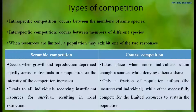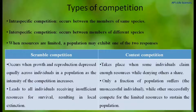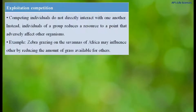In contest competition, some individuals claim enough resources while denying others a share. Only a fraction of the population suffers — the unsuccessful individuals who cannot claim ownership of the food — while others successfully compete for the limited resources and sustain the population. Only those species which are successful sustain their population.